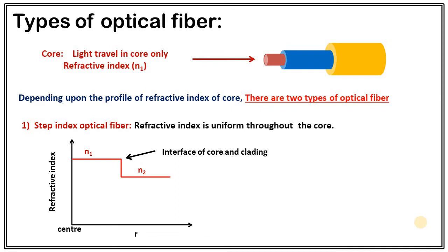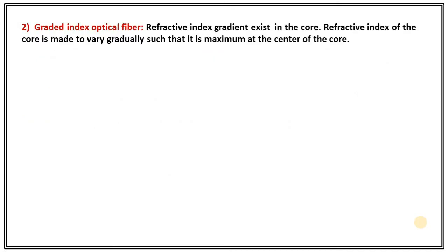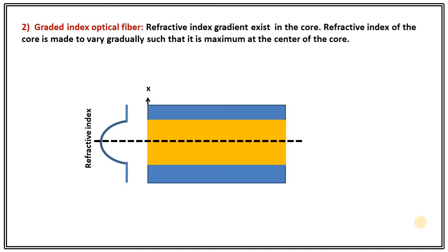The second type is graded index optical fiber. As the name suggests, a refractive index gradient exists in the core — the refractive index is made to vary gradually such that it is maximum at the center of the core. If you plot the refractive index profile, this black dotted line represents the central axis of the core, and you can see the refractive index is maximum at the center and then gradually decreases. That is why it is called graded index optical fiber.